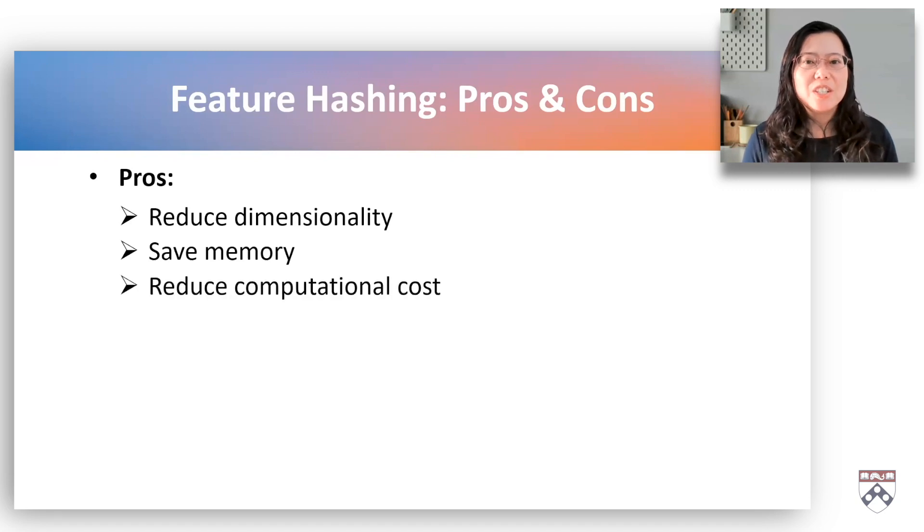Feature hashing can be more computationally efficient than one-hot encoding, especially when dealing with sparse data.